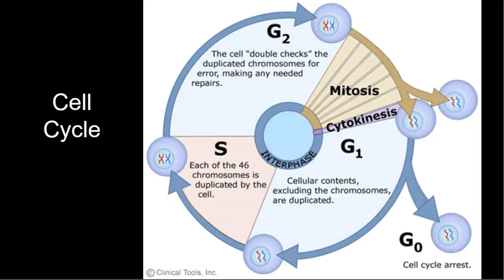These point mutations will cause issues in proteins that govern the cell cycle. We're concerned about the ones that cause problems in proteins regulating the cell cycle. We start with G1, where growth factors let us know it's okay to duplicate. Then we go to the S phase — you could have poor replication or DNA damage. If you do get DNA damage, the cell should not divide. If everything goes well, we move into G2, check again, repair any mistakes, and then move into mitosis.